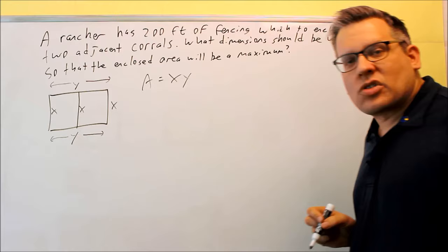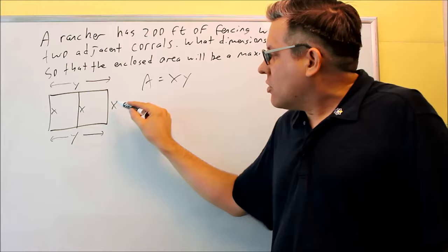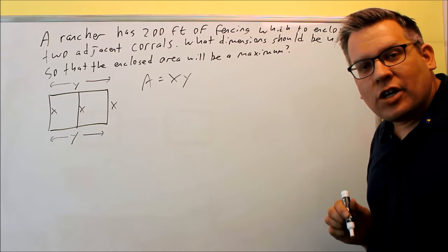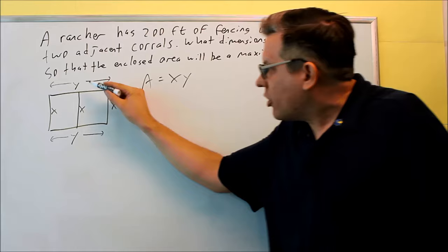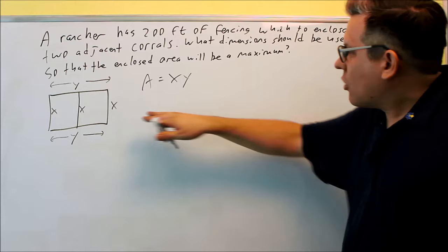We've got to use this 200 feet somewhere. 200 feet is used to create all the different sides of this corral here. So, I have three x's and I have two y's. All of that is going to be using part of the 200 feet for the material. We have to include the one in the middle also because there's material that's being used to make this into two separate corrals.